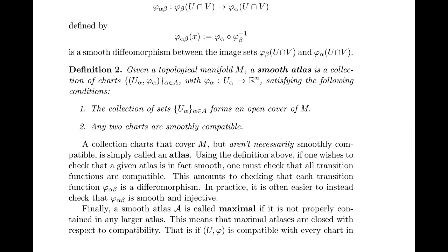A collection of charts that cover M, but aren't necessarily smoothly compatible, is called an atlas. And we can say that any topological manifold has an atlas, but might not necessarily have a smooth atlas. Now, using this definition, we see that it can be quite tedious to actually check whether or not something is a smooth atlas. And to check that something is a smooth atlas, this amounts to checking that each of these transition functions is in fact a diffeomorphism. In practice, it's often easier instead to check that they are smooth and injective.